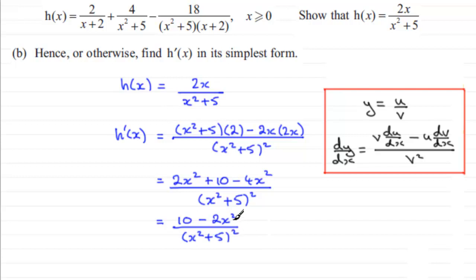You could leave it like that or you could take it a step further and factorize the top by pulling out 2 and then you've got 5 minus x squared and that's all divided by our denominator here x squared plus 5 all squared. And essentially there you have it. Okay?